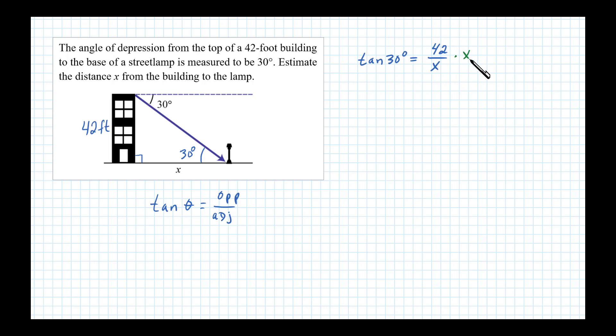All right, so we can multiply both sides by x. That's the same thing as cross multiplying. We get x times tangent of 30 degrees equals 42. Those x's cancel. And then dividing by tangent of 30 degrees, both sides, tangent of 30 degrees. We get here these cancel and so we get x equals 42 over tangent of 30 degrees.